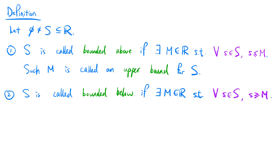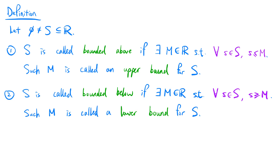s is called bounded below if there exists a real number m such that for all elements s in s, s is greater than or equal to m. Such m is called a lower bound for s.